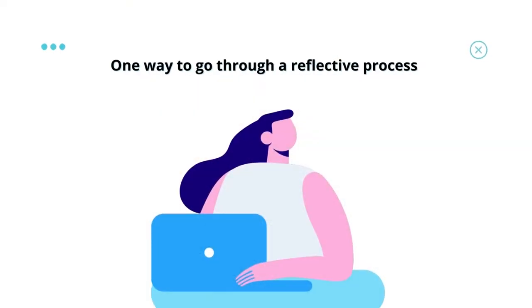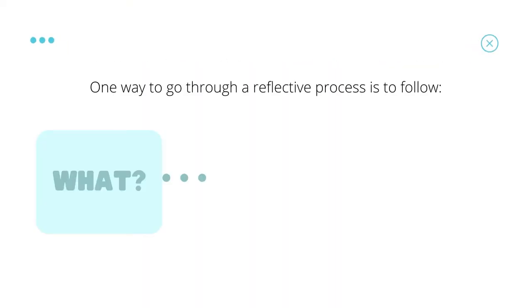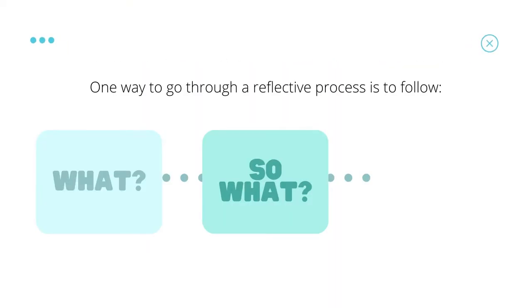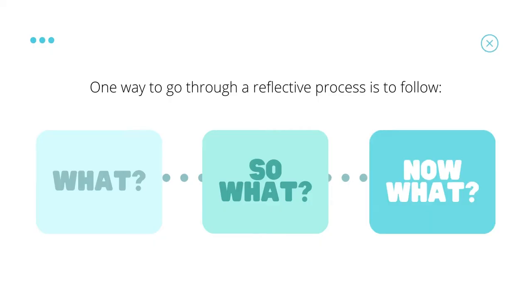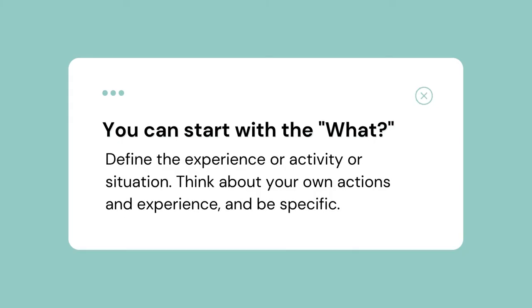One way to go through a reflective process is to follow a What, So What, Now What framework. You can first start by defining the experience, activity, or situation. Think about your own actions and experience, and be specific.